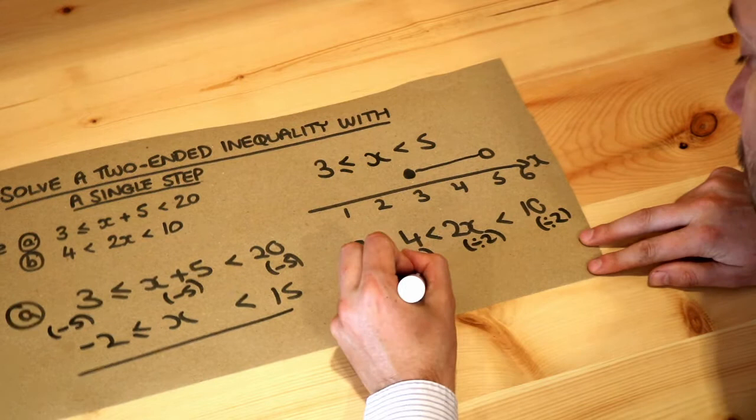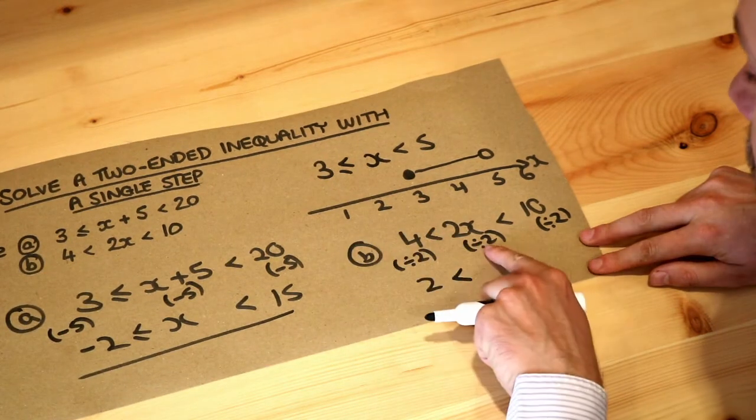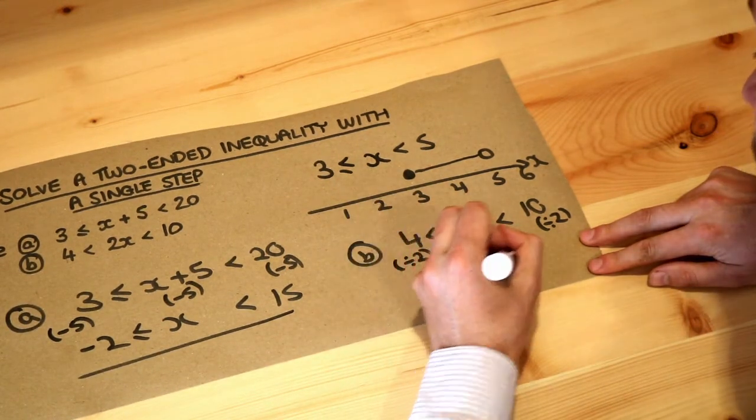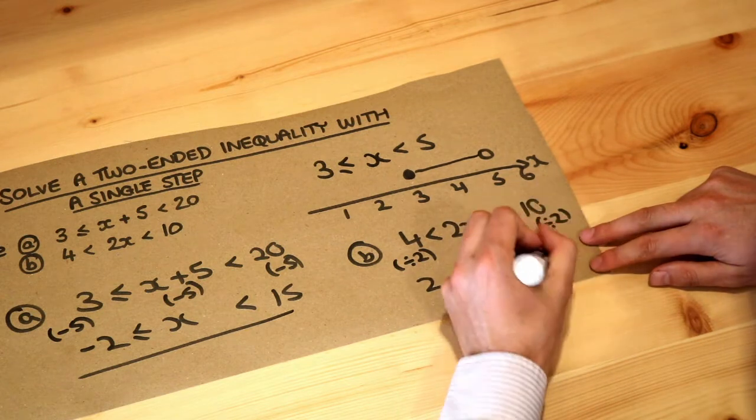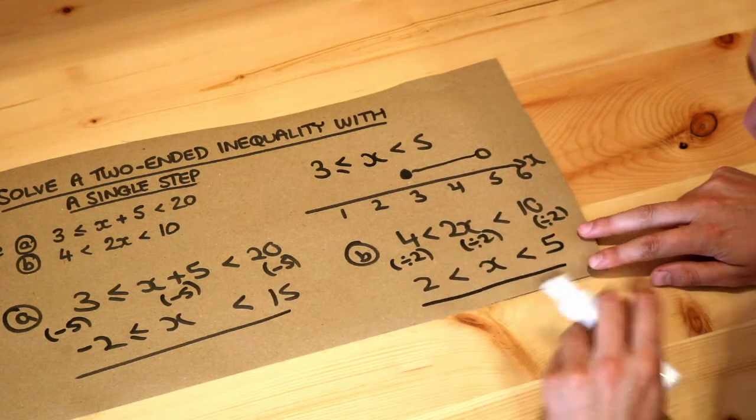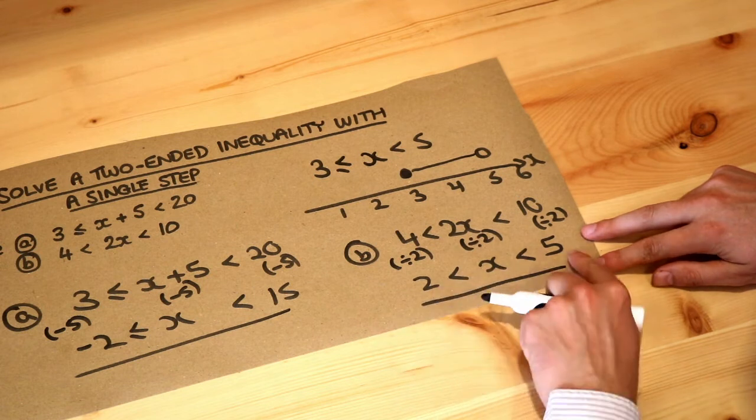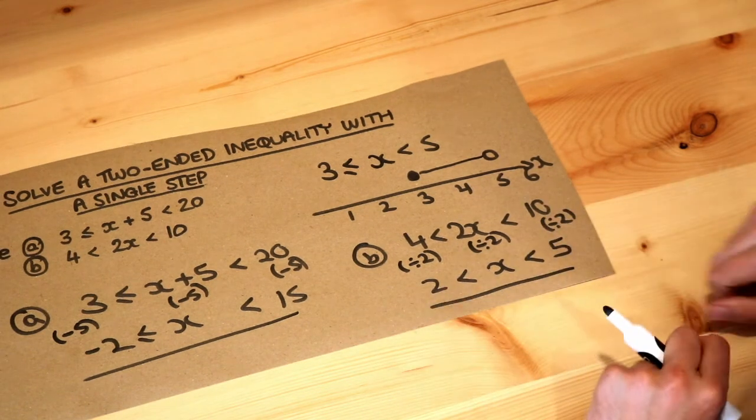4 divided by 2 is 2 is less than, divided by 2 gets rid of that times by 2, leaving x, and less than 10 divided by 2 is 5. So that's the final answer, x is between 2 and 5, but not including 2 or 5 themselves.